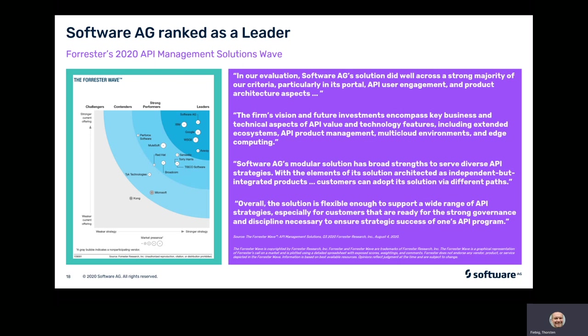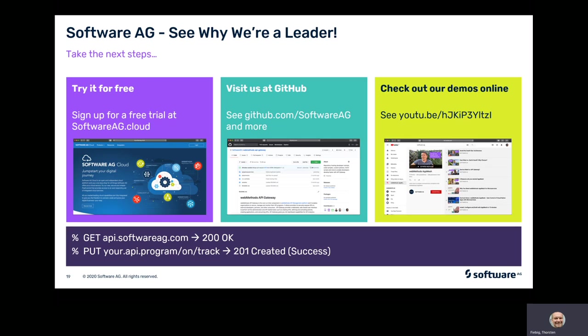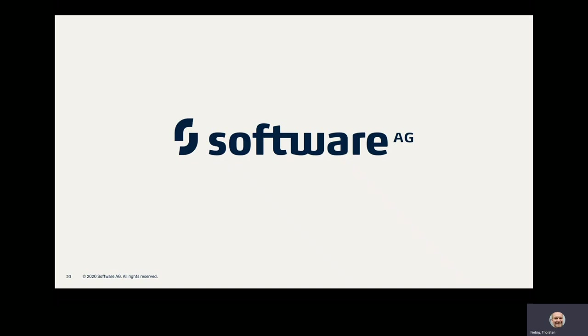Software AG has the platform which can deliver all the required API management capabilities, and we have recently been recognized as a leader in the Forrester API Management Solution Wave. You can give us a try — please have a look at our cloud offering or free trial product images on Docker Hub. We also have a GitHub presence where you can find a big collection of tutorials and code samples covering a lot of use cases. You can also have a look at our online demos available on our YouTube channel. Thank you for your attention and hope to talk to you again soon.